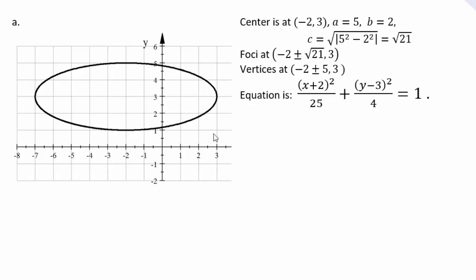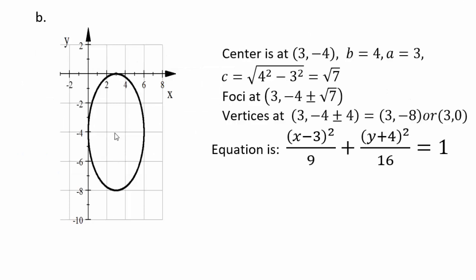For the last ellipse example, center is (3, −4), going 4 up and 4 down and 3 left and right. So b = 4 and a = 3. The equation is (x−3)²/9 + (y+4)²/16 = 1. Since c = √(16−9) = √7, the foci are at (3, −4 ± √7). The vertices are at (3, 0) and (3, −8) because the major axis is vertical, which you can verify from the graph.